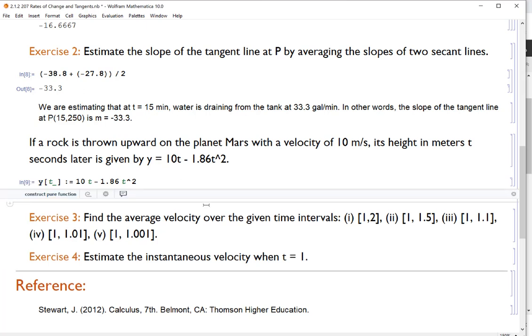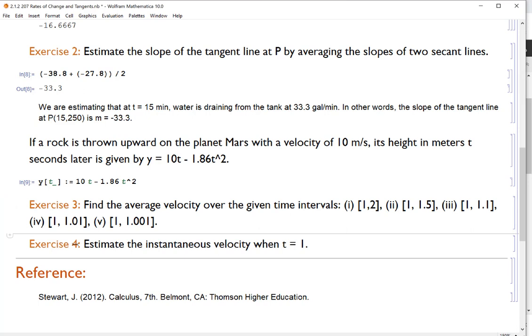And what I want to do for exercise three is find the average velocity over these given time intervals. Now, if you notice, each of these time intervals are getting one, they're getting shorter and shorter. Two, they're keeping one as the first time, like the first time we check our clock is at T equals one. And so what I think what we're trying to do is by taking these averages, we're trying to get an estimate for the instantaneous velocity when T equals one, which is what exercise four asks us to do.